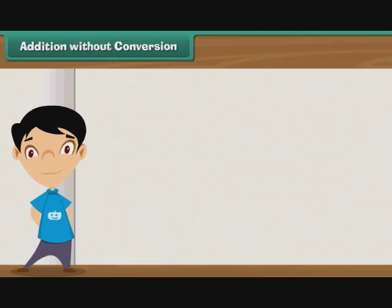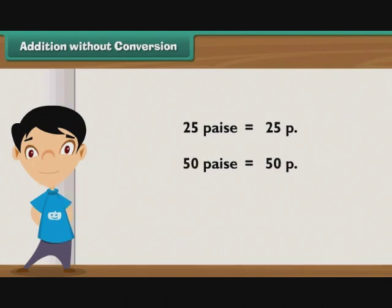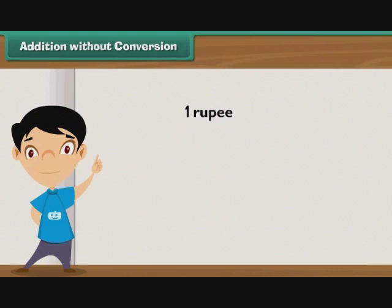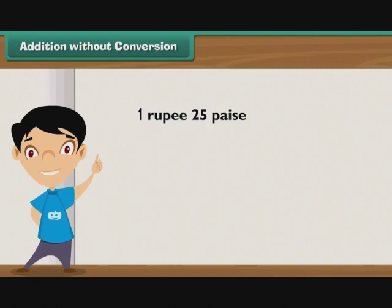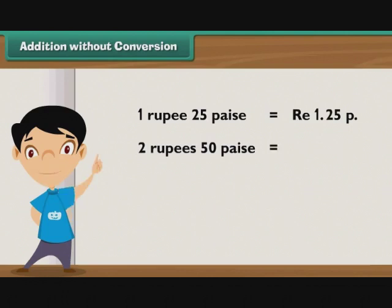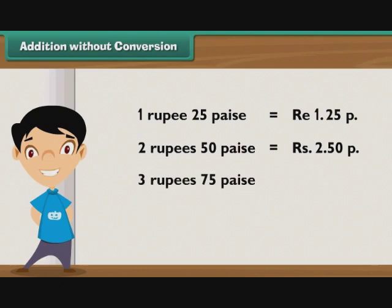Addition without conversion. We can write 25 paise as 25 P. In the same way, we can write 50 paise as 50 P and 75 paise as 75 P. We can write 1 rupee as Rupee 1. Similarly, 2 rupees can be written as Rupees 2, 3 rupees as Rupees 3, 4 rupees as Rupees 4, and so on. So we can write 1 rupee 25 paise as Rupee 1.25 P, 2 rupees 50 paise as Rupees 2.50 P, and 3 rupees 75 paise as Rupees 3.75 P.